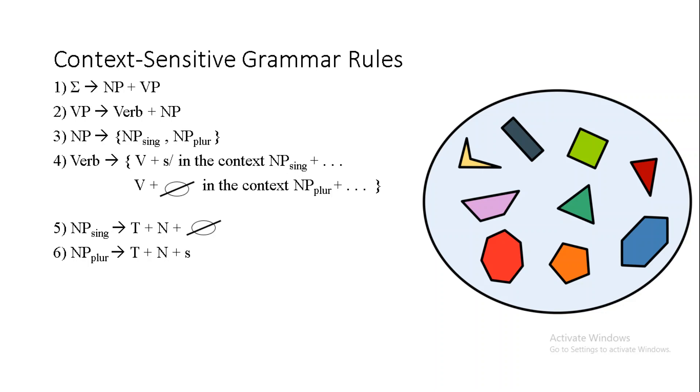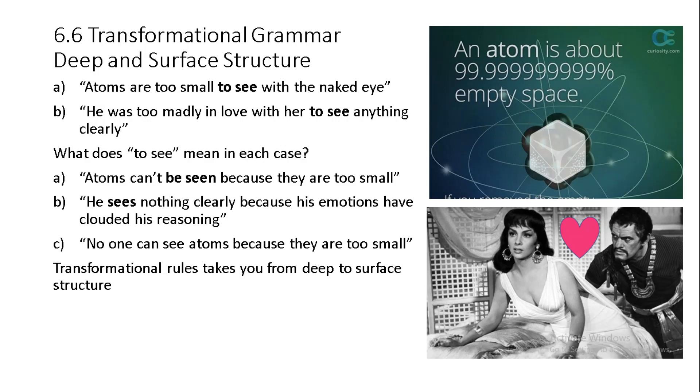What, though, really is this deeper structure, and why is it so much harder to grasp on a surface-level analysis alone? Well, to understand this, we have to return to the problem of linguistic ambiguity. Does the set of words to see, for example, have the same meaning in the following two sentences? The first sentence, atoms are too small to see with the naked eye, and the second sentence, he was too madly in love with her to see anything clearly. Although the exact same set of words appear in each case, that is, quite literally, to see, we have a sense that the first one has a more maybe objective relation to the atoms, while the second has a more subjective relation to the he who is being described, to put it quite informally. We could rewrite these, then, as atoms can't be seen because they are too small, and he sees nothing clearly, because his emotions have clouded his reasoning.